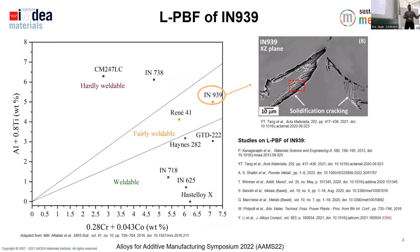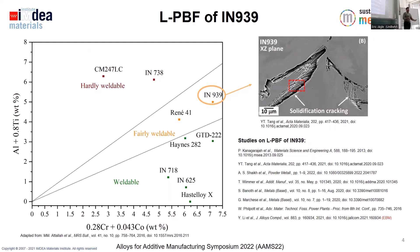It is conventionally processed through casting, but there are already some studies regarding its processing through LPBF, which is a bit complex due to its susceptibility to cracking. This morning we have seen studies on Inconel 718, 625, and SWAX. These are relatively easy to process due to their lower content in aluminum and titanium, but in IN939 we have solidification or liquation cracking issues.